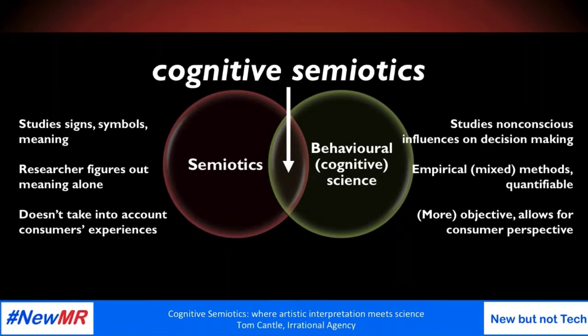Given the issues we've identified, science comes to the rescue in the form of cognitive semiotics. Cognitive semiotics integrates the substance of cognitive sciences with the substance of semiotics — it's actually a real transdisciplinary area of academic study. It combines semiotic analysis with experimental and ethnographic approaches. As we see in this Venn diagram, cognitive semiotics sits between the world of semiotics and behavioural science. Semiotics studies signs, symbols and meaning, but the researcher tends to figure out the meaning alone. In contrast, behavioural science studies non-conscious influence and uses mixed methods to quantify analyses and allows the consumer to have a perspective, making it more objective.